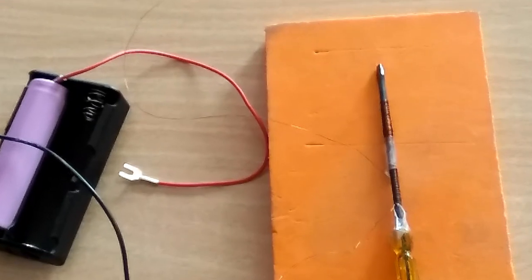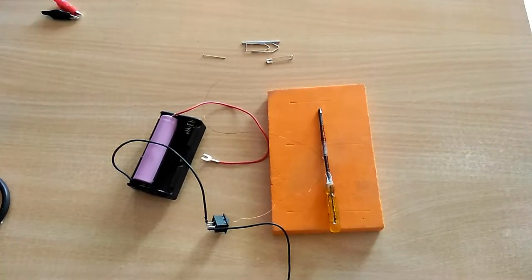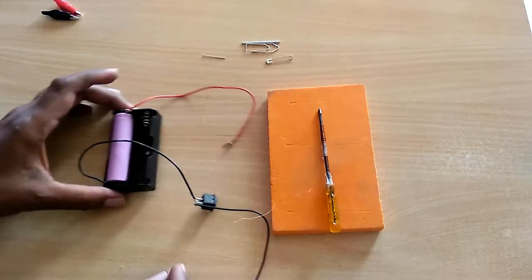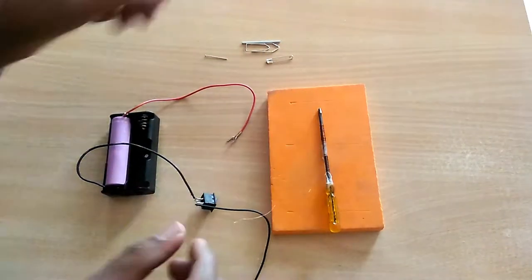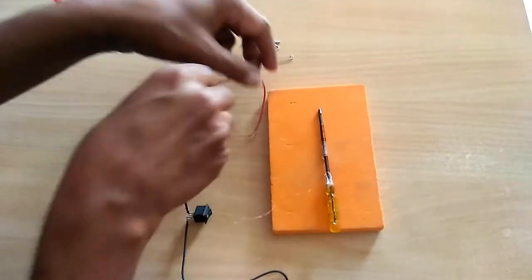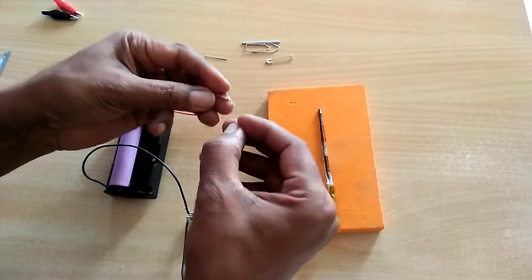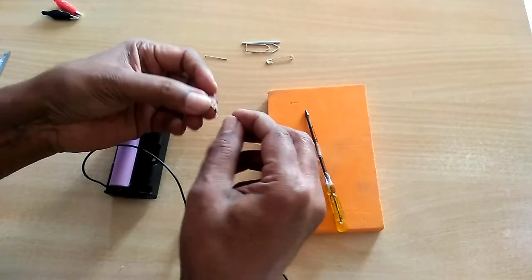I am using a 3.7V rechargeable battery. You can use any battery cell that you have, but if the battery power is less the induced magnetism in this coil will be less. If possible use a stronger battery as that will create a stronger electromagnet.